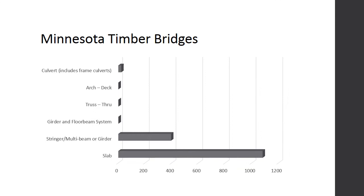The variety of timber bridge structure types is extensive at the national level, and even within Minnesota numerous types exist, including slab, stringer, multi-beam or girder, girder and floor beam system, truss, arch, and culverts. According to the National Bridge Inventory, these bridges make up a total of 1,503 bridges at the county level. A majority of the bridges — 1,476 — are either slab, or stringer, multi-beam, or girder. Given that a significant portion of the population lies within these two types, they will be the focus of this presentation.